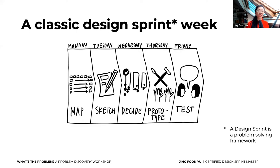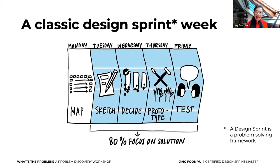Let's look at a classic design sprint. A classic design sprint is normally about five days — you map, sketch, decide, prototype, and then test. About 80% of a classic design sprint is focused on a solution — on solving the problem. But what if it's the wrong problem to solve in the first place?